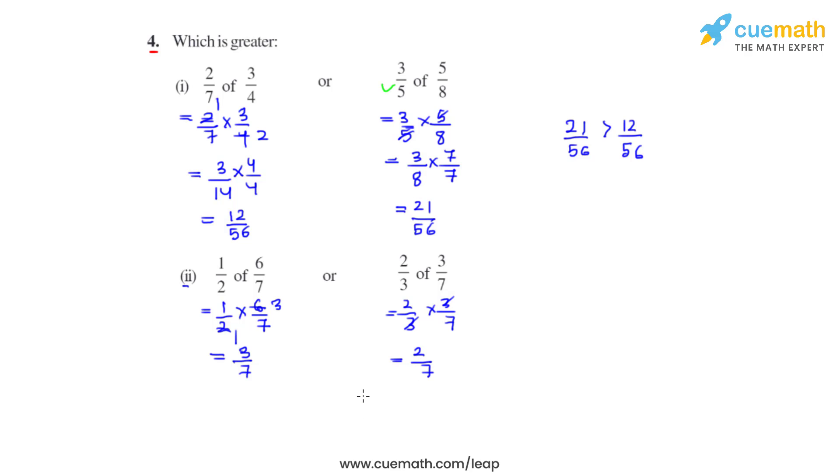The denominators are already the same, so they are like fractions. We can easily compare the numerators: 3 over 7 is greater than 2 over 7 because 3 is greater than 2. We can clearly say that 1 over 2 of 6 over 7, that is half of 6 over 7, is greater than 2 thirds of 3 over 7. And this is how we solve this problem.